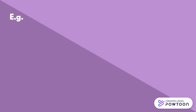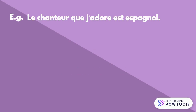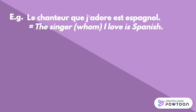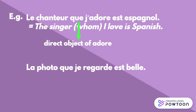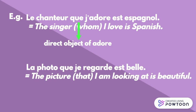For example: le chanteur que j'adore est espagnol — the singer whom I love, or the singer I love, is Spanish. Que is the direct object of adore. Another example: la photo que je regarde est belle — the picture that I am looking at is beautiful. Que is the direct object of regarde.